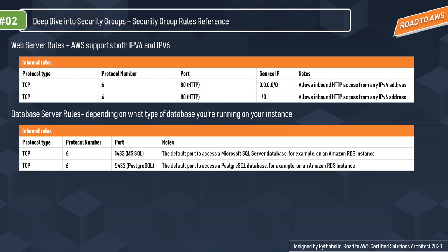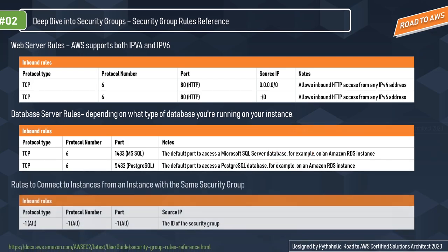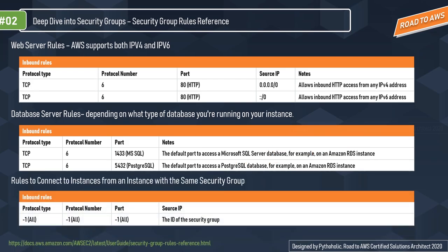You can restrict internet access to only what's needed — for example, remove the outbound traffic rule that allows all traffic. If you wish to connect instances with the same security group, you can add -1, which means all access, and provide the security group ID. I've mentioned the points important for the certification exam here — check the link in the description for more details.